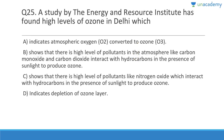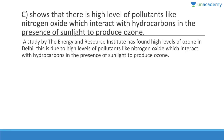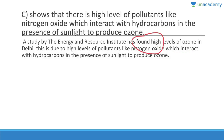Question 25: A study by TERI (The Energy and Resources Institute) found high levels of ozone in Delhi, showing high levels of pollutants like nitrogen oxides which interact with hydrocarbons in the presence of sunlight to produce ozone. Answer is C. Tropospheric ozone is produced because nitrogen oxides interact with hydrocarbons in the presence of sunlight.